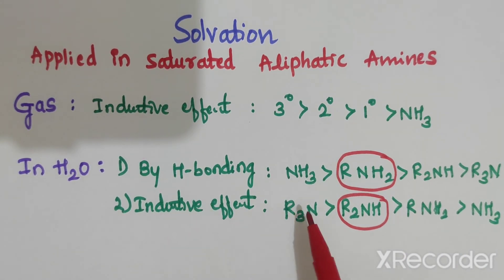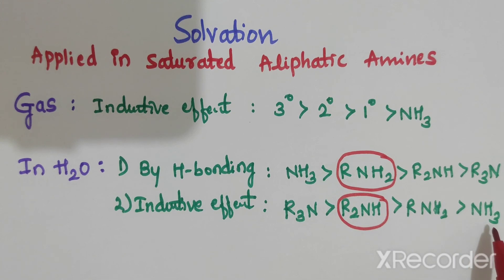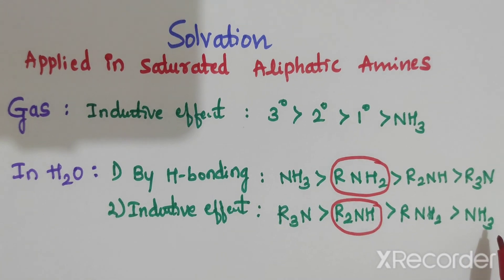In case of inductive effect, R3N is more basic than R2NH, then RNH2, then NH3 ammonia.